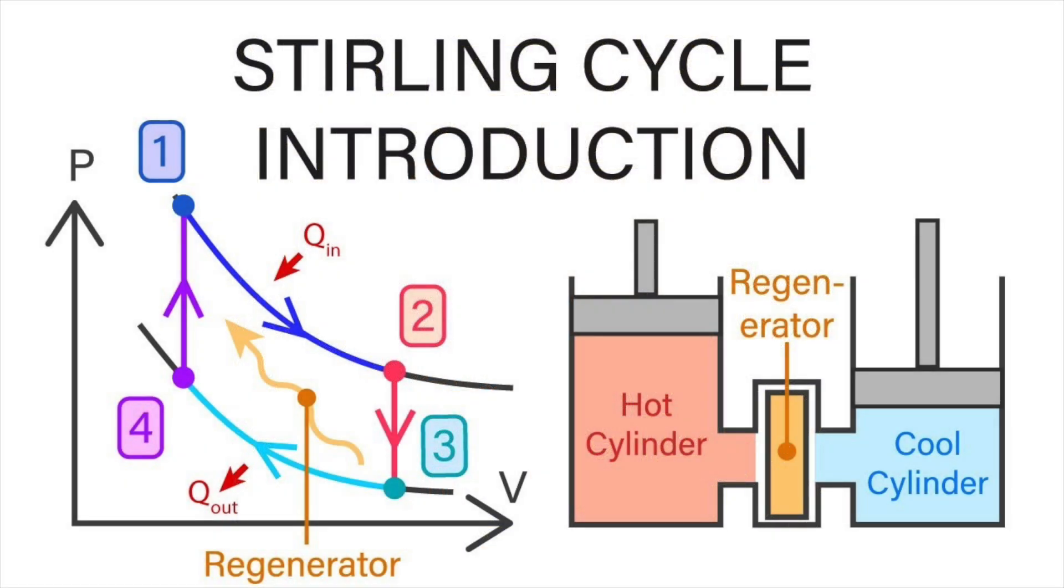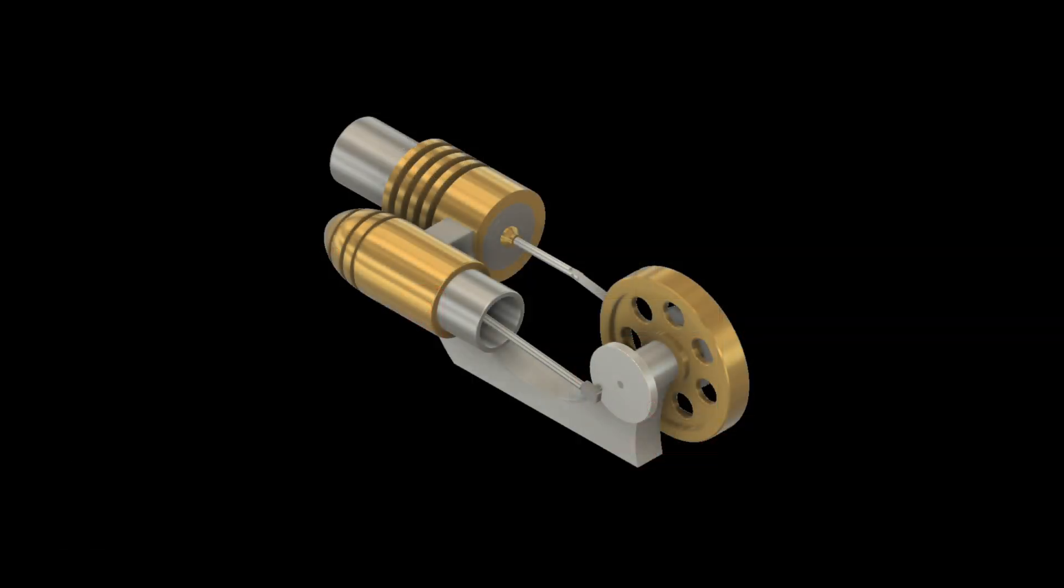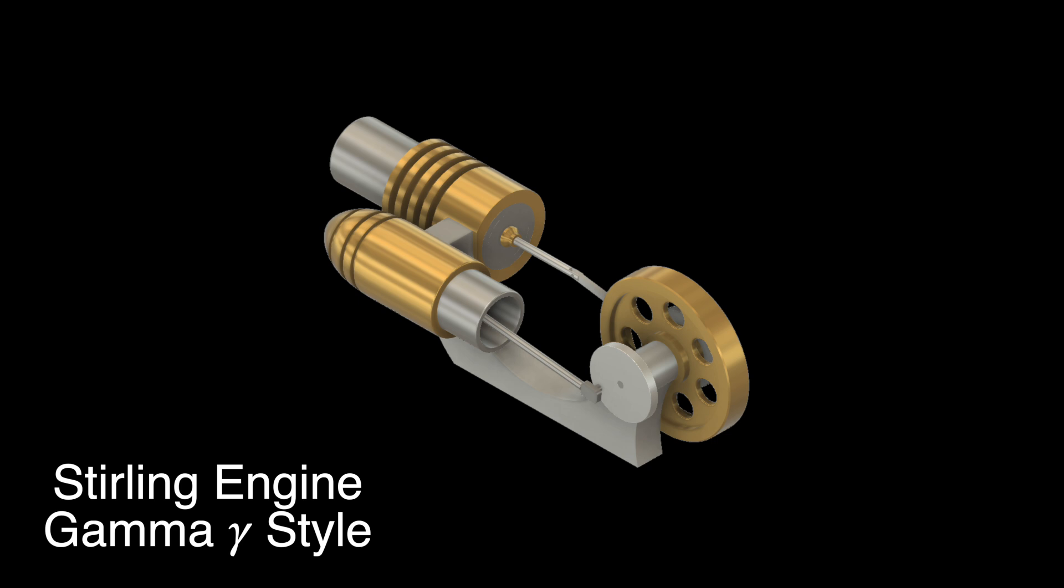If there's interest, we'll look at the details of the Stirling cycle in another video. Stirling engines fall into three major categories, but to keep things simple, we are only going to consider the gamma-style engine in this video. The gamma engine has a separate displacer and work cylinder connected via channel to move heated air from one cylinder to the other.